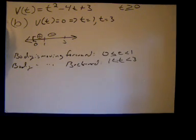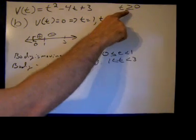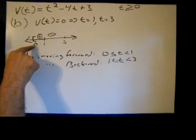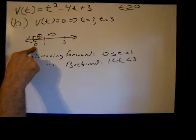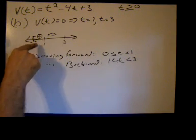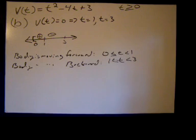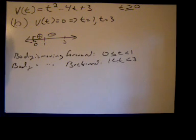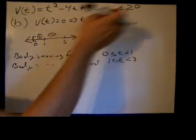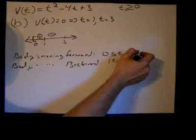Since t is greater than or equal to 0, and 0 is in the domain of the velocity function, and the velocity is positive at t = 0, the body is not sitting still — it is actually moving forward at t = 0. The problem doesn't say it starts from rest, so whether to include t = 0 is debatable, but we include it.